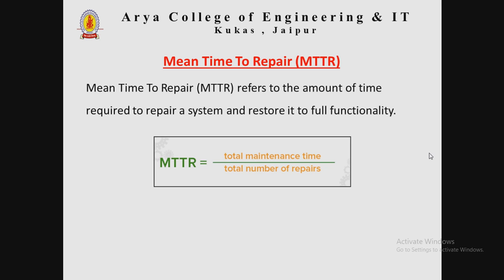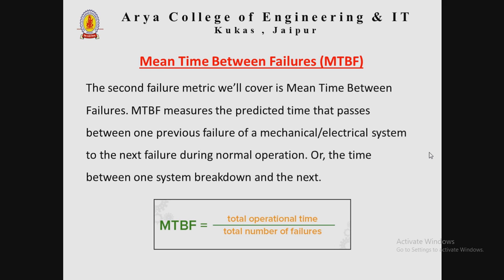There are three types of mean time metrics. The first is Mean Time to Repair (MTTR), which refers to the amount of time required to repair a system and restore it to full functionality. Mathematically, MTTR is equal to total maintenance time divided by total number of repairs.